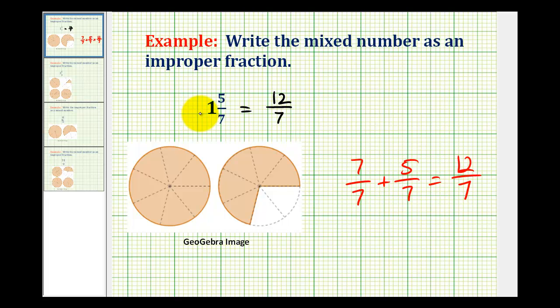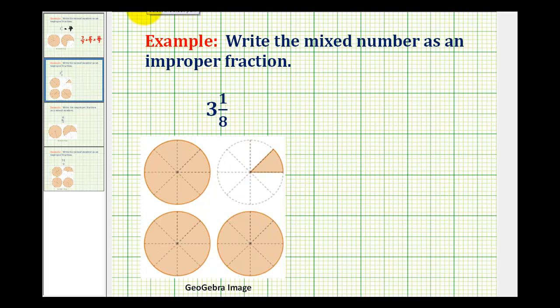Let's take a look at a second example. Here we want to write three and one-eighth as an improper fraction. So we know it's still going to be eighths. The numerator will be eight times three, plus one.